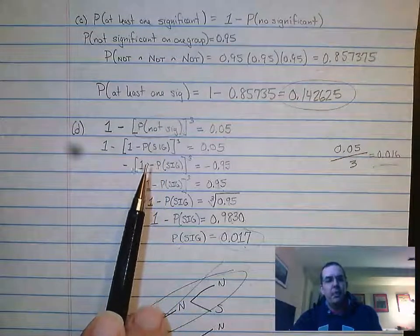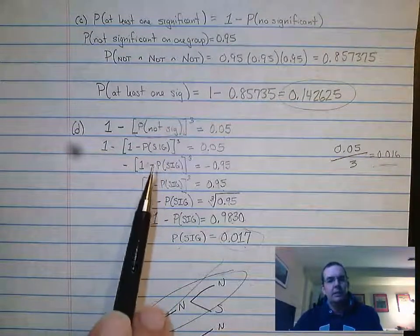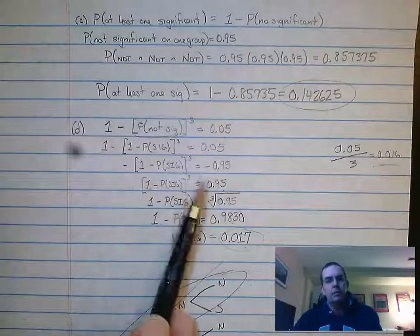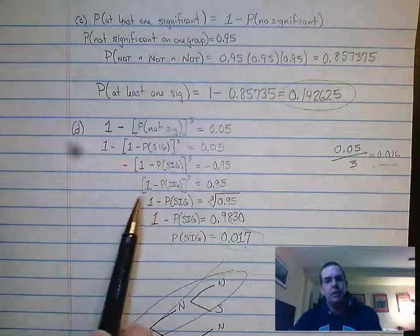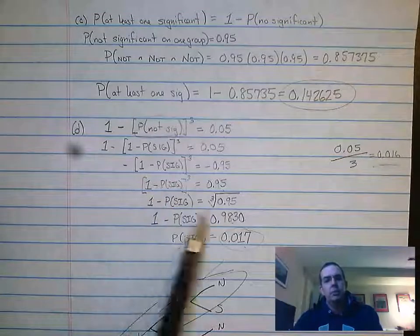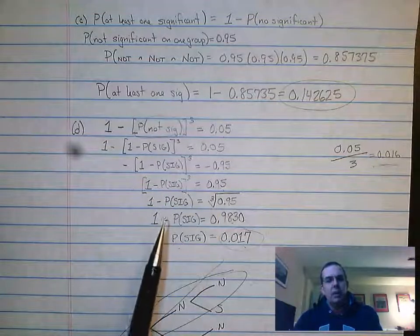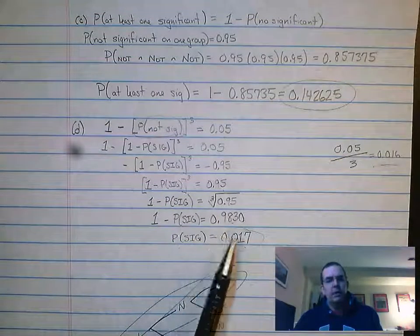And then I solved for P(sig). So what I ended up doing is I moved the 1 over, became negative 0.95, divided by negative 1, cube root of both sides. So now 1 minus P(sig) equals 0.9830.